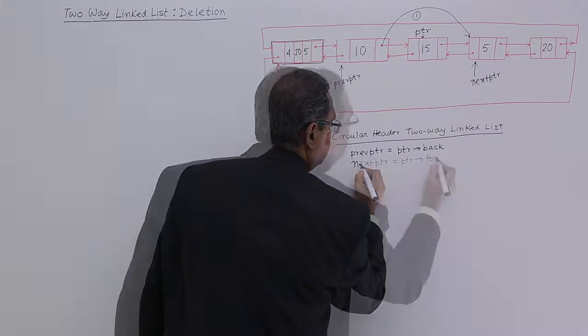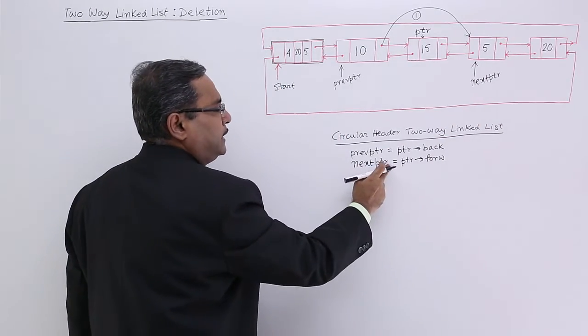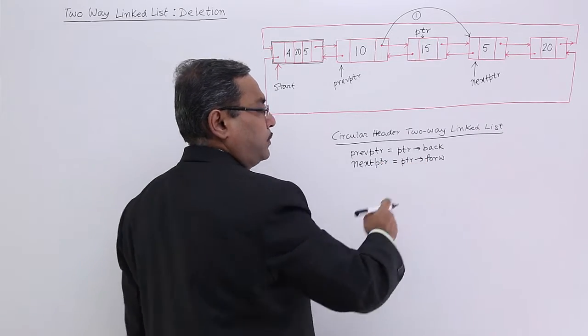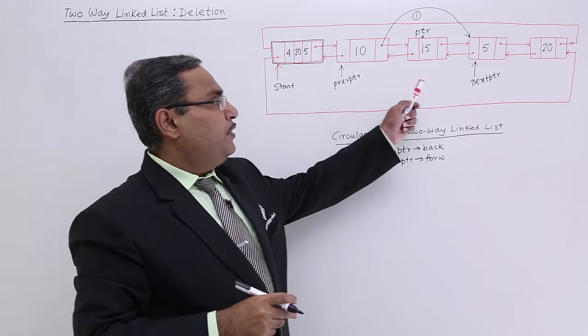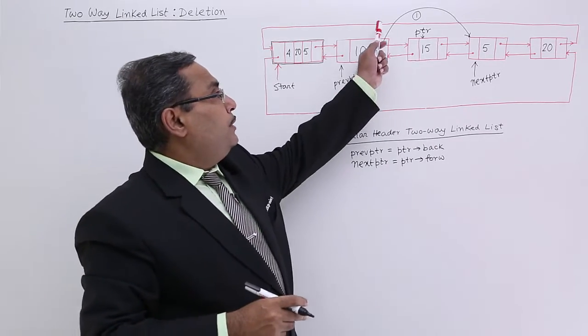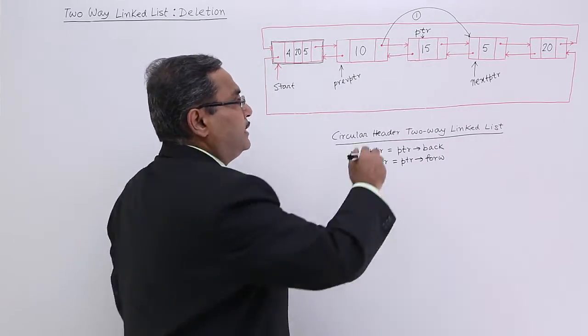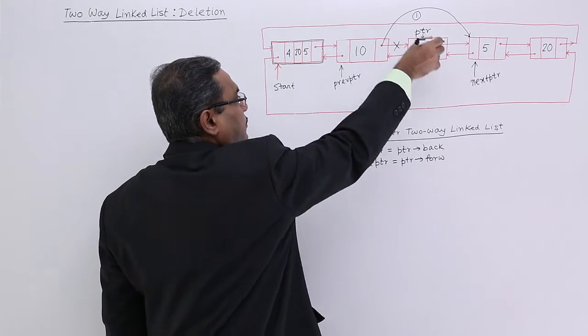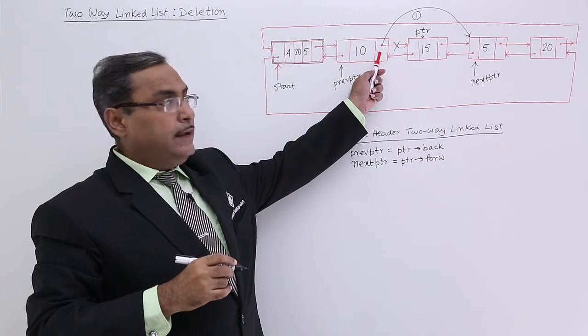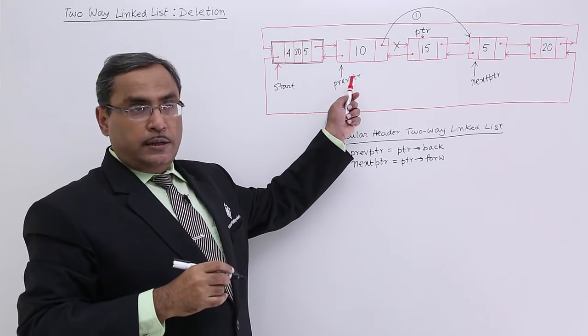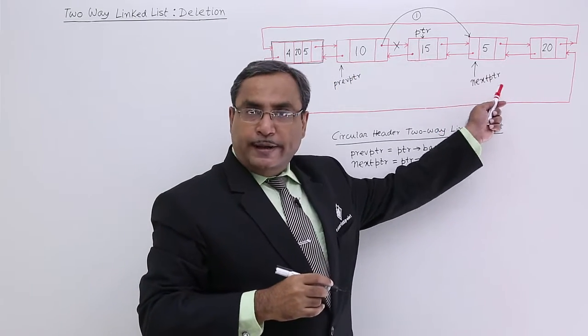Next PTR is equal to PTR implies forward. In this way we have initialized these two variables. Now, I need to have this particular link now. This link will be discarded. It will be pointing to that. Then what is this? This is the forward link of this PREP PTR and should be initialized with next PTR.